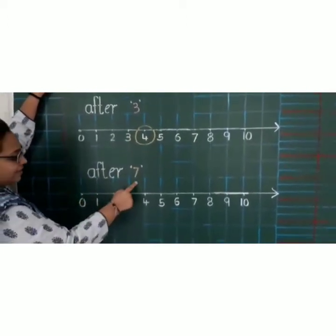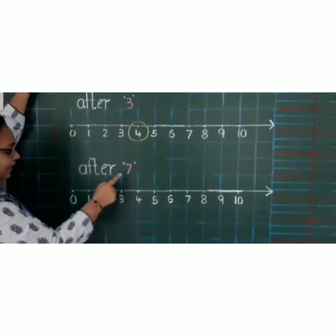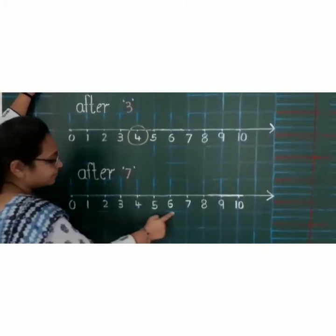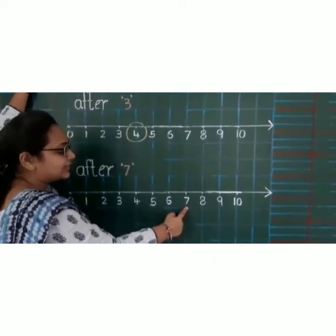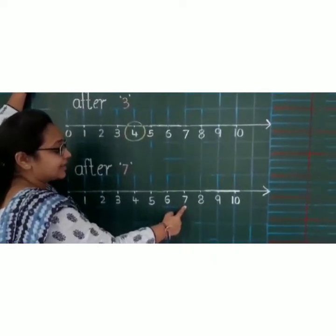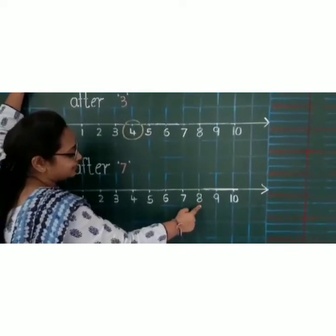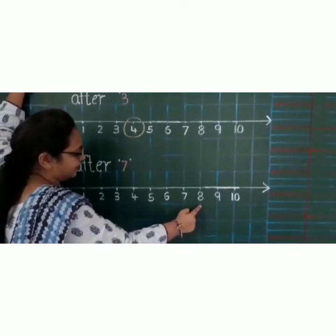Next. After 7. And where is 7 on the number line? Here. And what comes after 7? 7 ke baad kya aata hai? Yes. 8. 8 comes after 7. So we will mark 8.